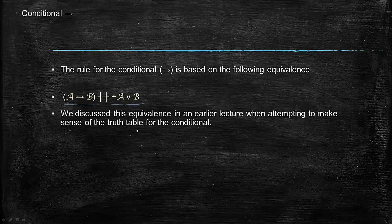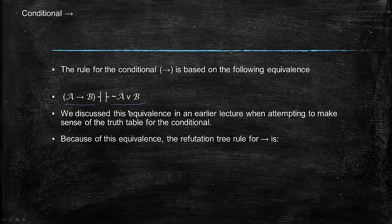Since the 'or' is a disjunction, we know we can just use the branching rule for that. So because of this equivalence, whenever we encounter a conditional when making refutation rules, we write it like this: 'if A then B' becomes 'not-A or B', and check.